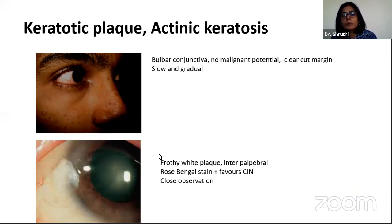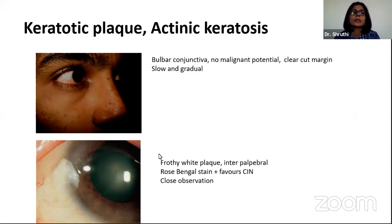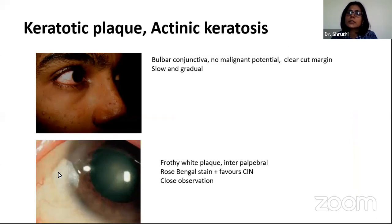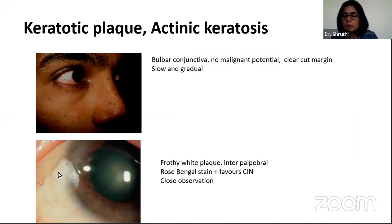Another entity is keratotic plaque and actinic keratosis. These are mainly in the bulbar conjunctiva with no malignant potential, with a clear-cut margin and very slow gradual growth. Actinic keratosis presents with a frothy white plaque in the interpalpebral area. The differentiating feature tipping towards conjunctival intraepithelial neoplasia would be staining with rose bengal stain. These patients also need to be observed closely.